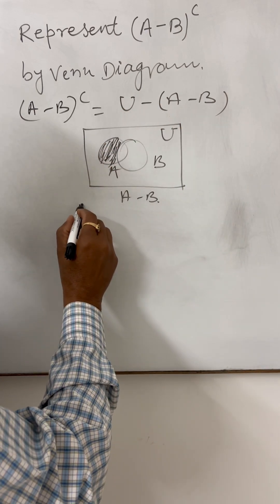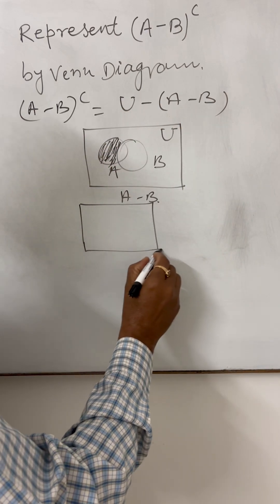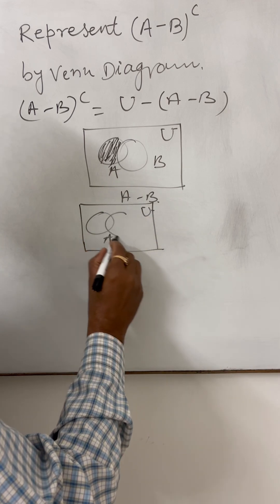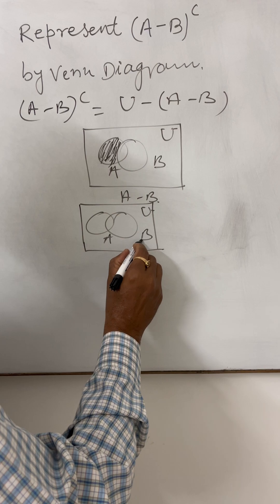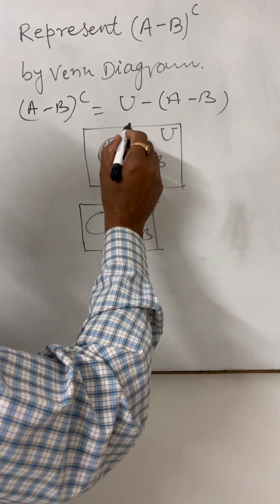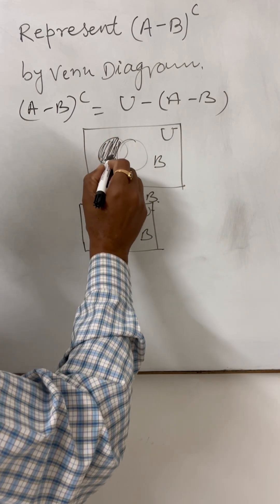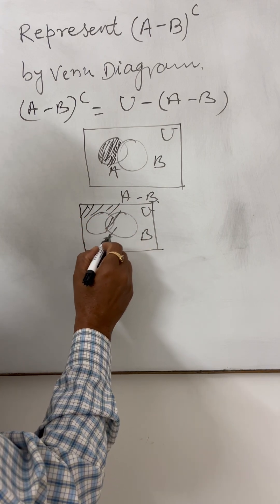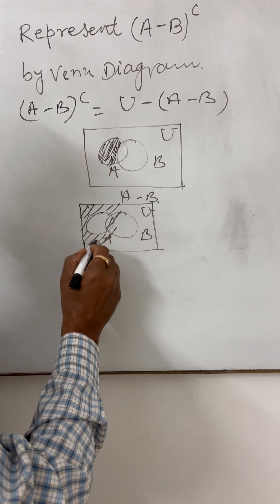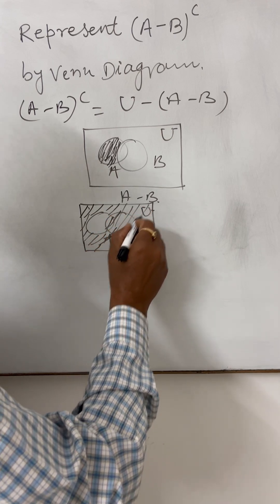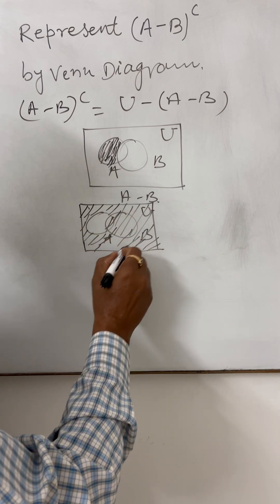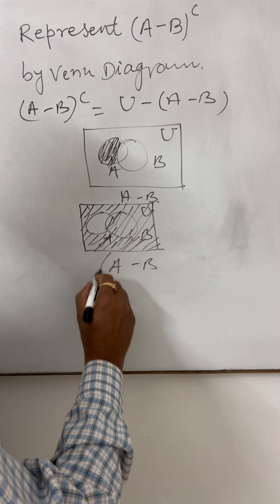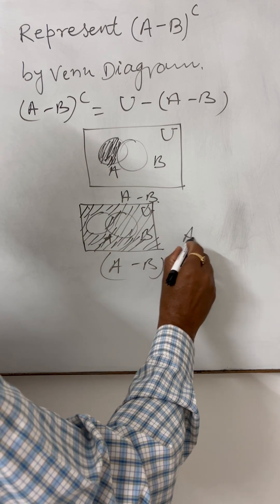Now we have to find universal set minus A minus B. This is the universal set, set A, and set B. From this entire universal set we have to remove the shaded portion, so the remaining part gives the result. This shaded portion gives us A minus B whole complement, and this is the answer.